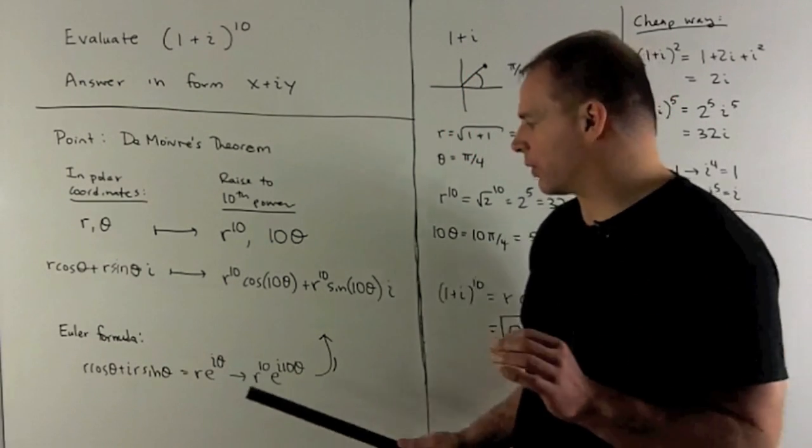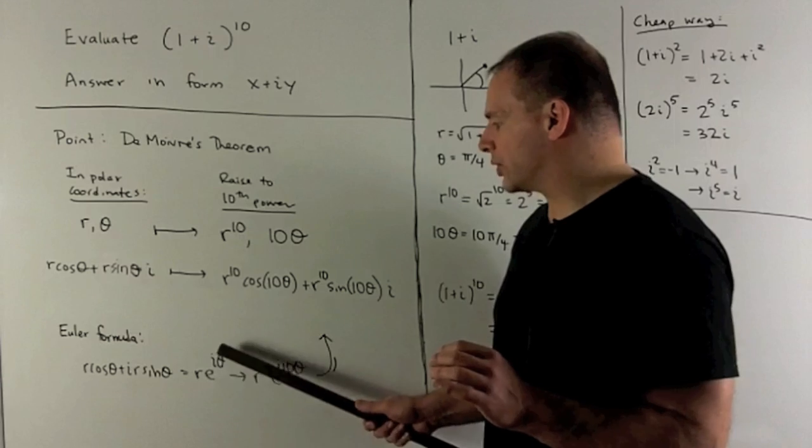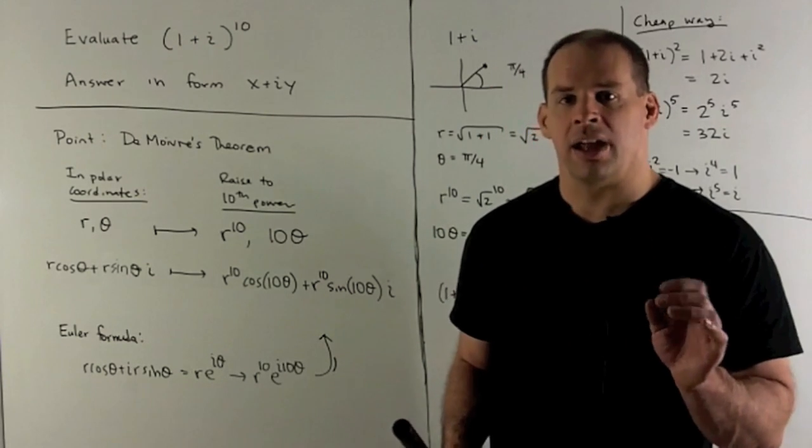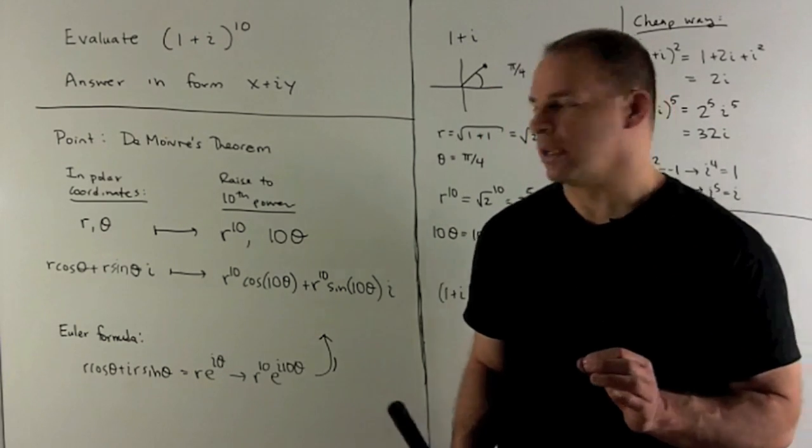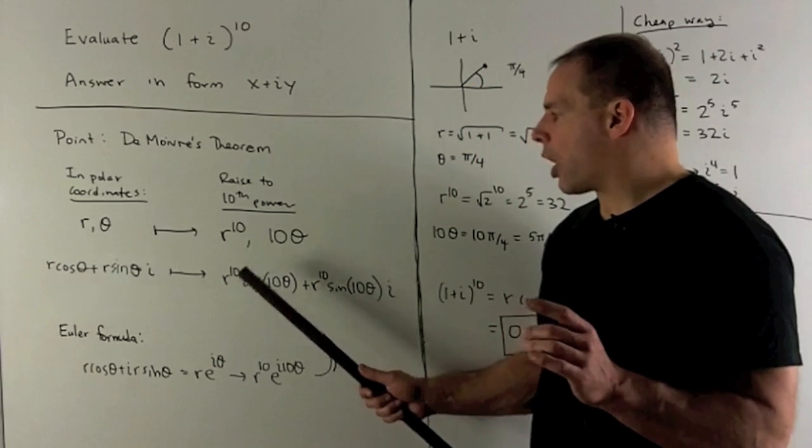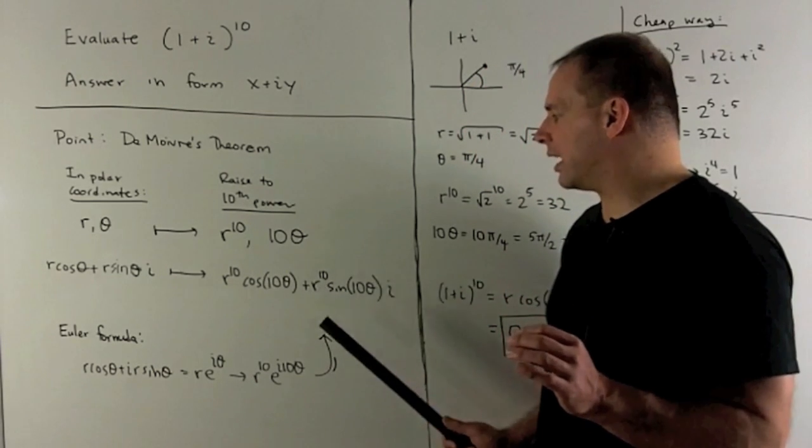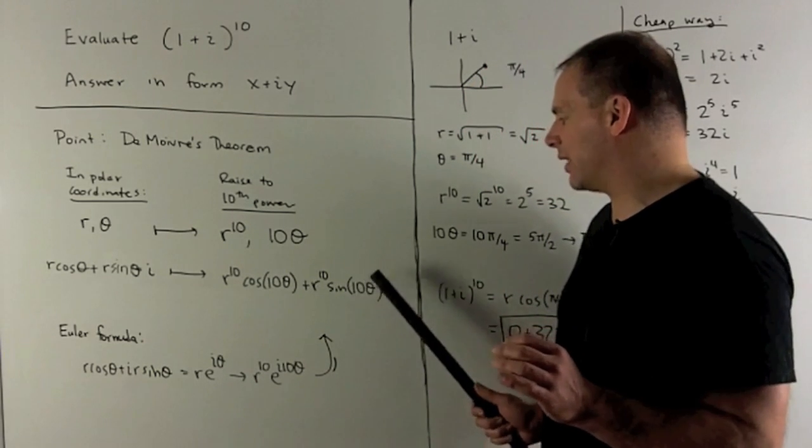The new angle comes from e to the i theta. So it's going to give me, instead of a theta, a 10 theta. And then we just go back to cosine and sine. So that'll give us r to the 10 cosine 10 theta plus r to the 10 sine of 10 theta i.